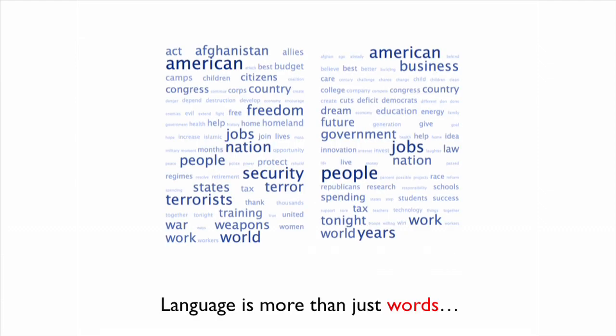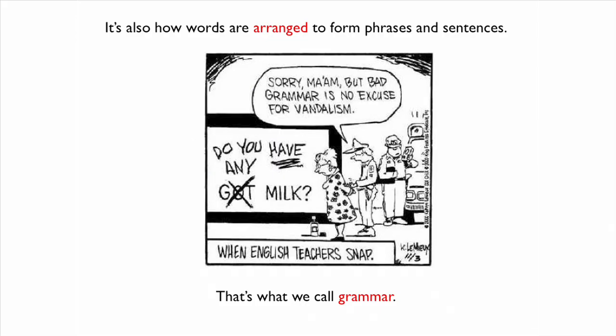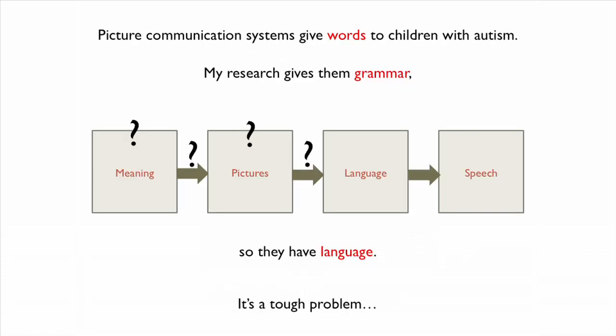Language is more than just words, right? It's also a way in which you arrange words to create phrases, to create sentences. And that's what we call grammar. And that's my research. We've already been able to give words to children with autism, and I'm hoping that if I can give them grammar, then we've given them language.